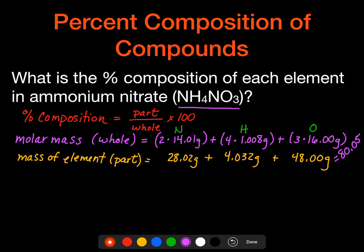So now, in order to determine each one of these individually, let's go ahead and do that. So nitrogen is going to be the 28.02 grams divided by 80.05 grams times 100, and we end up getting 35.0%.